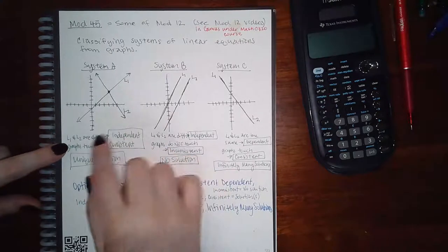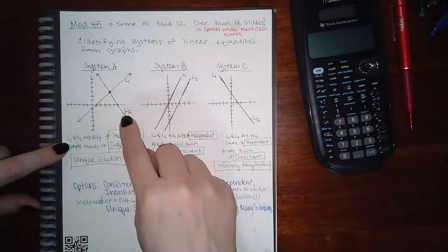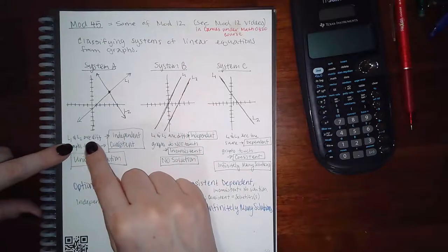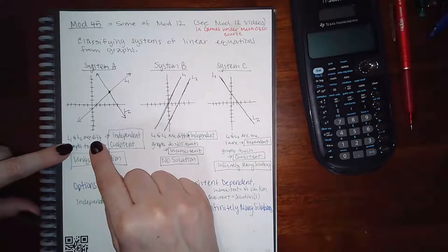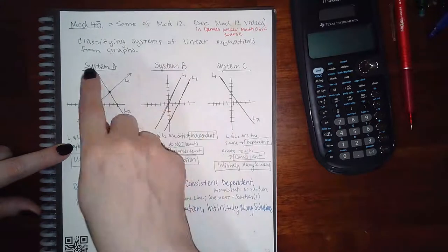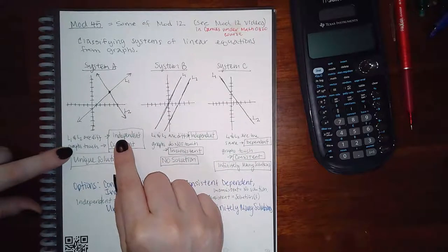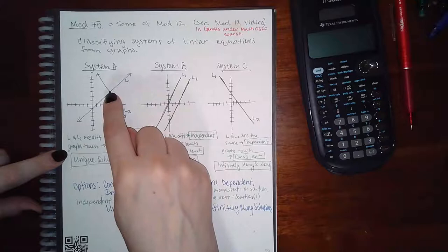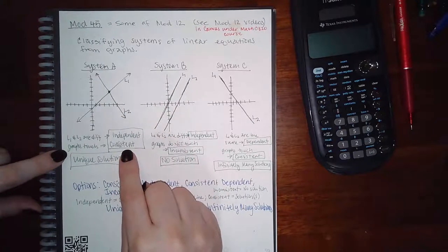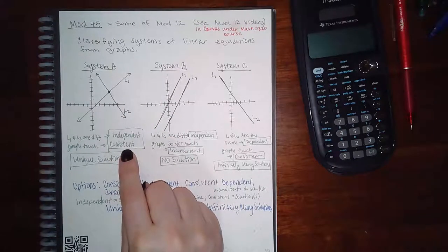Let's look at System A. System A has L1 and L2. L1 and L2 are obviously two different lines. They have completely different slopes. This one's got a positive slope, this one's got a negative slope. So that makes them independent. And they do in fact touch right here at this point, so that makes them consistent independent.